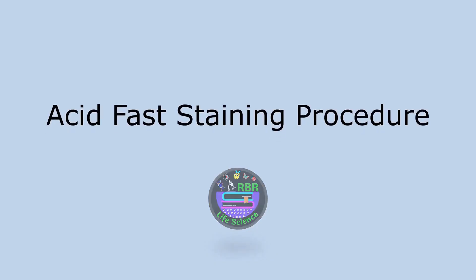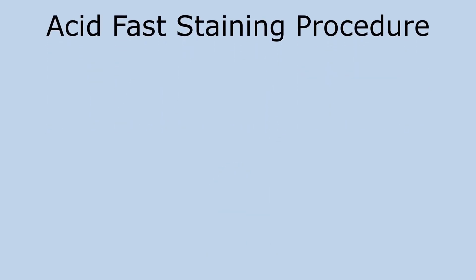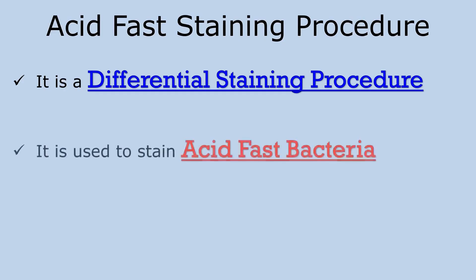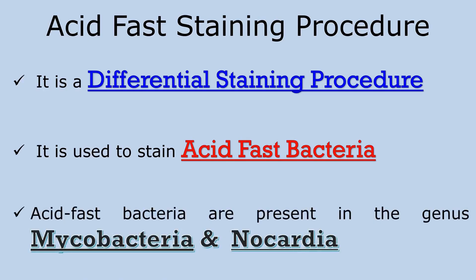Acid-fast staining procedure is a differential staining procedure. This procedure is used to stain acid-fast bacteria. These acid-fast bacteria are present in the genus Mycobacteria and Nocardia.